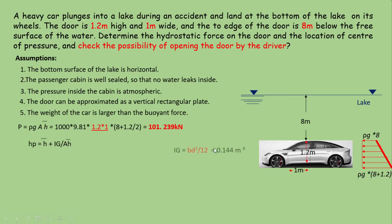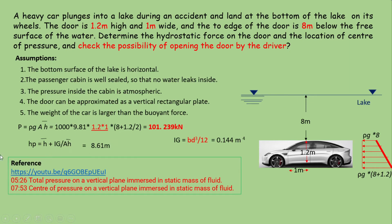Moment of inertia Ig can be calculated as bd cubed by 12. That is equal to 1 into 1.2 raised to 3 divided by 12, which equals 0.144 meter raised to 4. Substituting, you will get hp as 8.61 meters. So hydrostatic force is acting through the center. Theoretical details of these calculations are discussed in this video. For more details you can refer this.